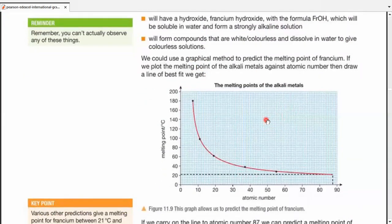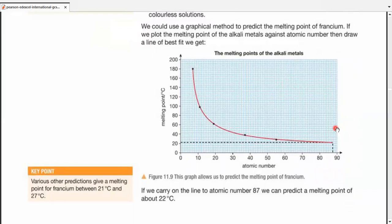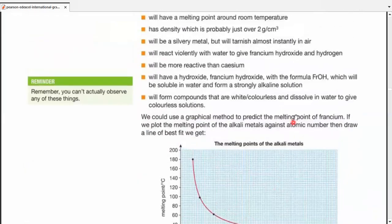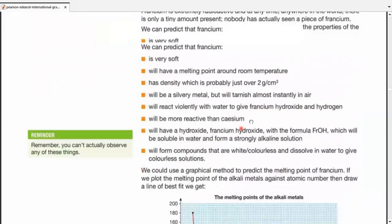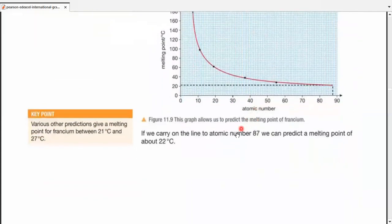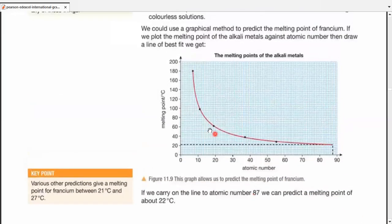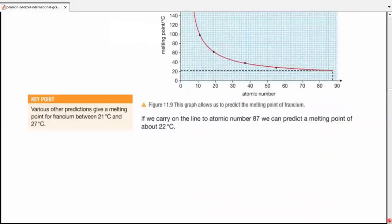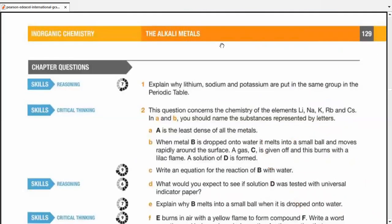If we tend to use the graphical method to predict the melting point of francium, and we've plotted the melting point of almost all the metals, it's easy to get a better idea. So if we carry the line, we can predict the melting point of about 22 degrees centigrade. That's why the line of having a melting point around room temperature. Remember, these are all predictions. Various other predictions give a melting point of francium between 21 and 27 degrees centigrade. We chose the easiest method to predict the melting point of francium. That's about it. Thank you.